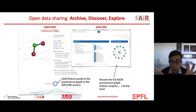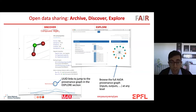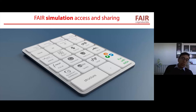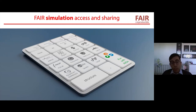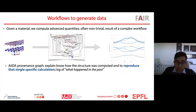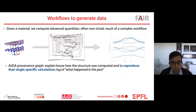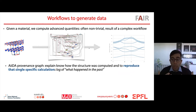This concludes the first part of my talk on FAIR data sharing. By combining AiiDA's provenance capabilities with Materials Cloud's visualization and sharing capabilities, you can achieve FAIR data sharing for computational data. In the next part, I want to stress how we can also achieve FAIR access and sharing for simulations. Given a material, what we do in research is compute relatively advanced quantities — from band structures to GW calculations or molecular dynamics — all results of complex workflows.